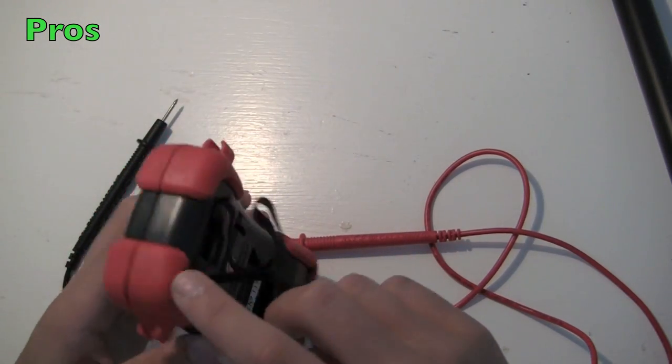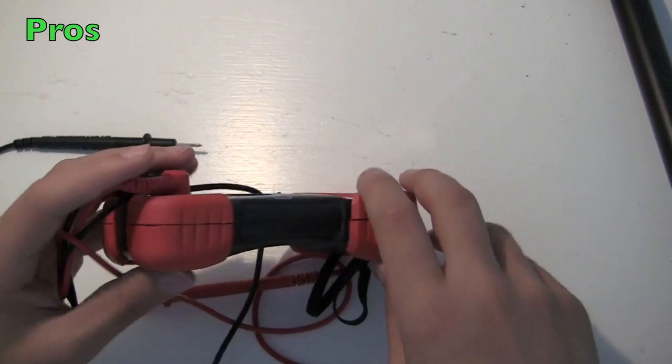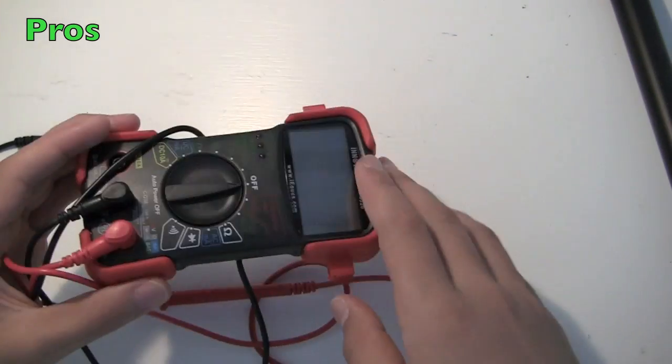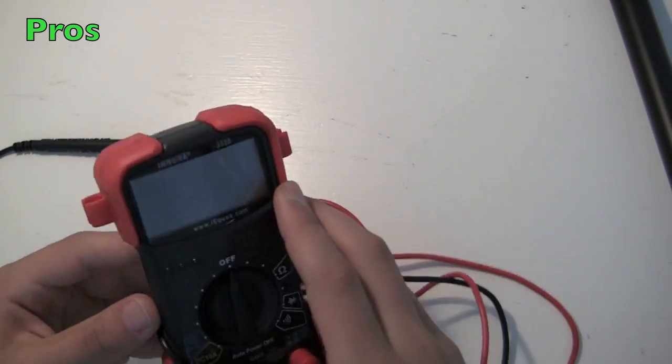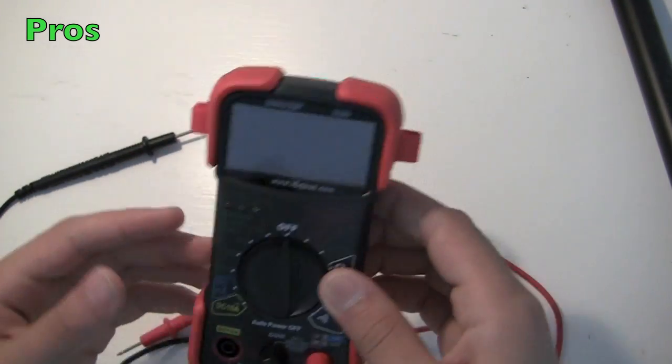Another good thing about this multimeter is it has these rubber protection protectors right here. So they sort of act like bumpers in case you drop it. It'll just hit those instead of hitting more of the delicate parts. So if you drop it, I don't think it'll break.